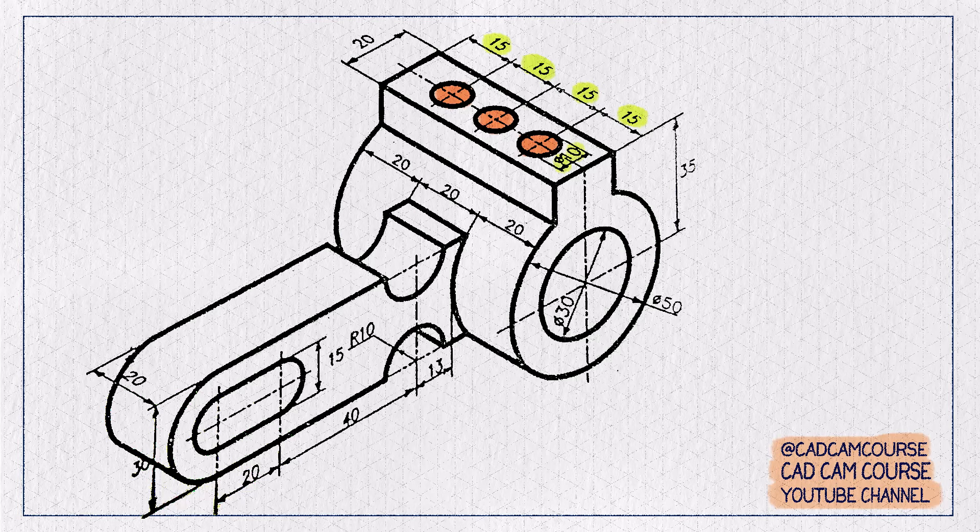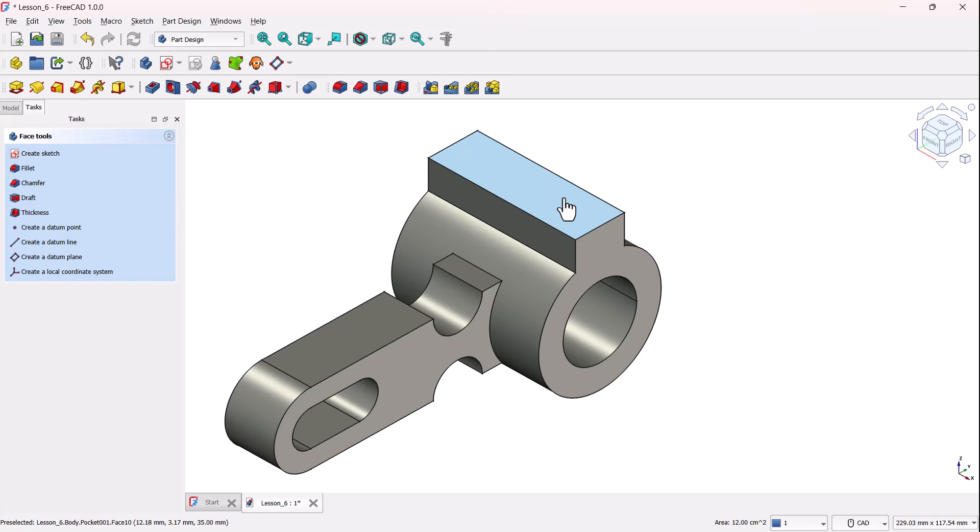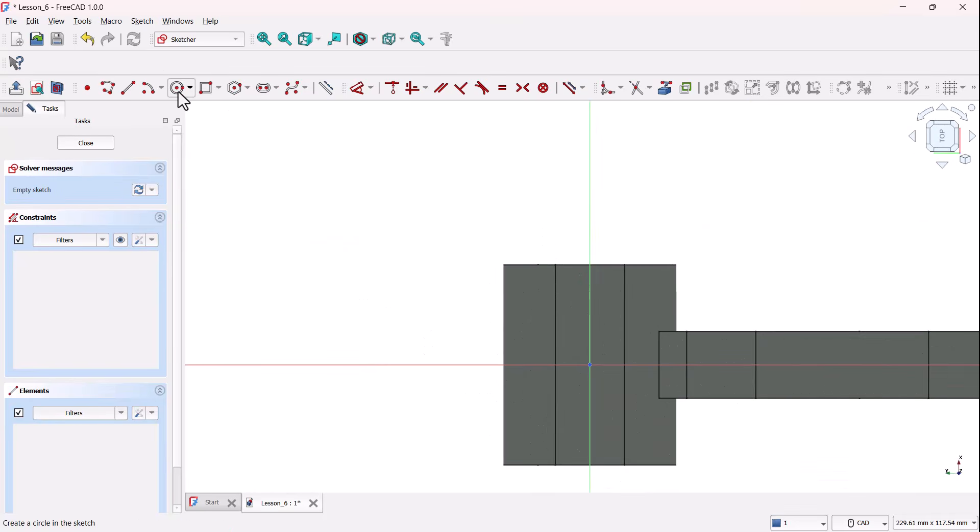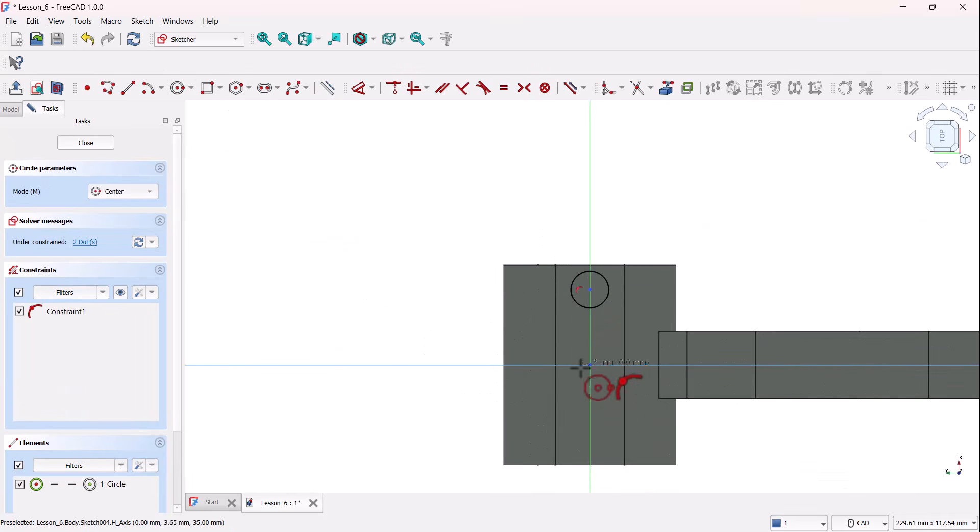Alright, time to add these three holes to the top of our model. Start by selecting this face, the flat surface where the holes will go. Click create sketch. Grab the circle tool and let's draw three rough circles along this central axis.